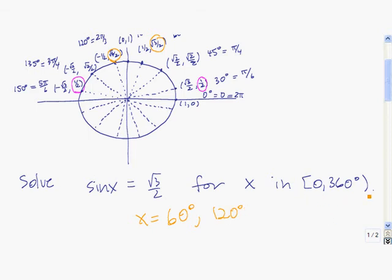We're just restricting from 0 to 360 degrees because if we were to keep going around the circle, we keep getting spots — we keep getting angles where the sine is equal to root 3 over 2. We'll worry about that later.